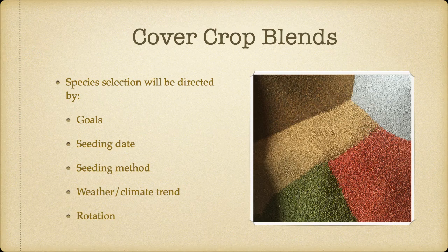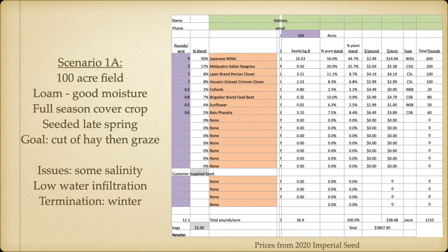Your species selection is going to be directed by your goals, your seeding date, your seeding method, what the weather and climate trends are, and what your rotation looks like. In scenario one, we're looking at a 100-acre field with medium loam texture, dealing with a full-season cover crop seeded in late spring. We're going to be taking a cut of hay and then grazing. Some of our issues are some salinity in the field, low water infiltration, and we're going to terminate at winter. In this case we're going to have Japanese millet, Italian ryegrass, Persian clover, crimson clover, collards, feed beet, sunflower, and phacelia.